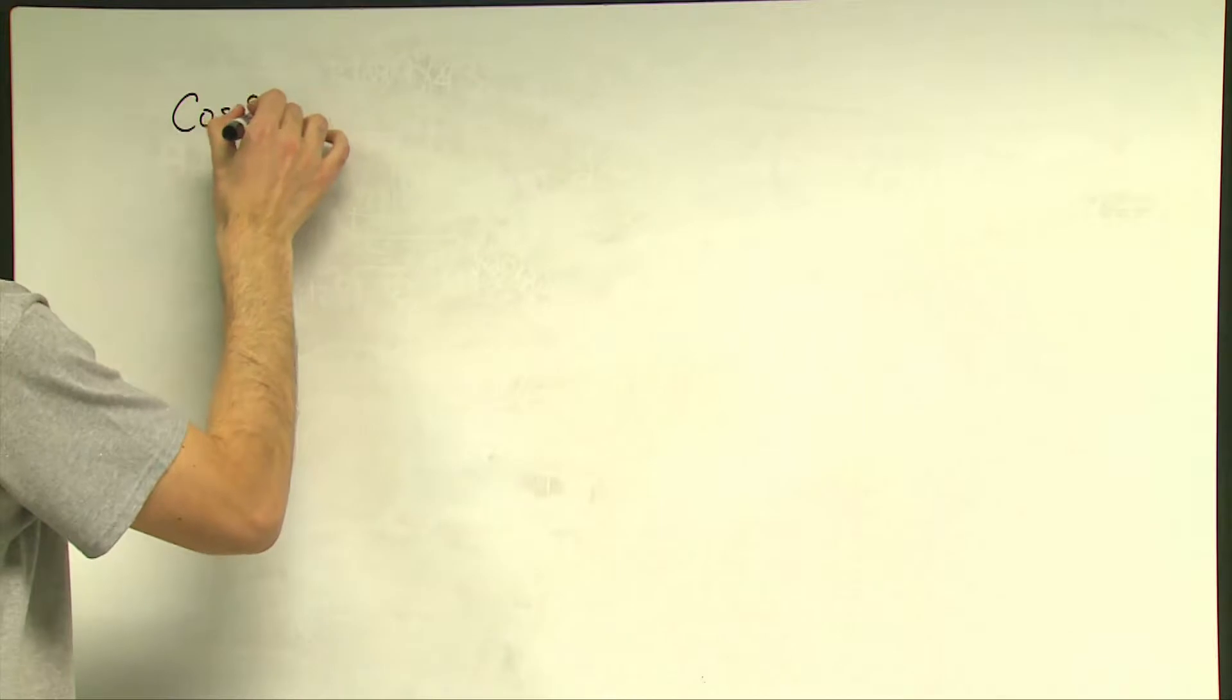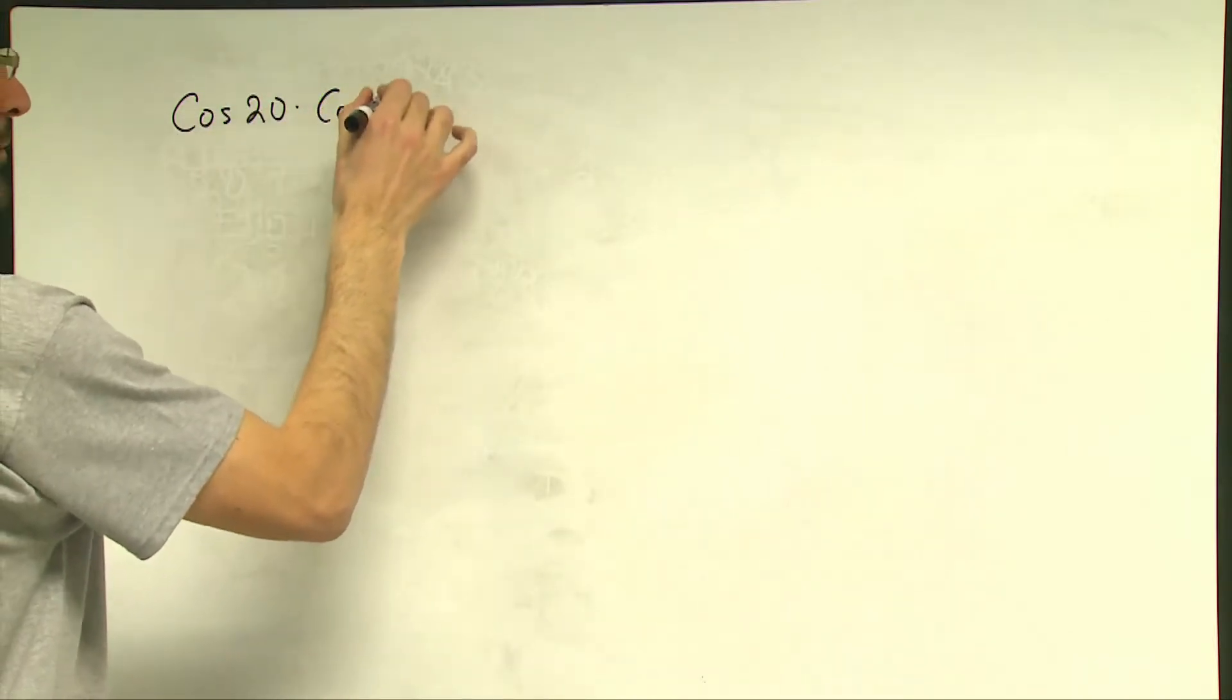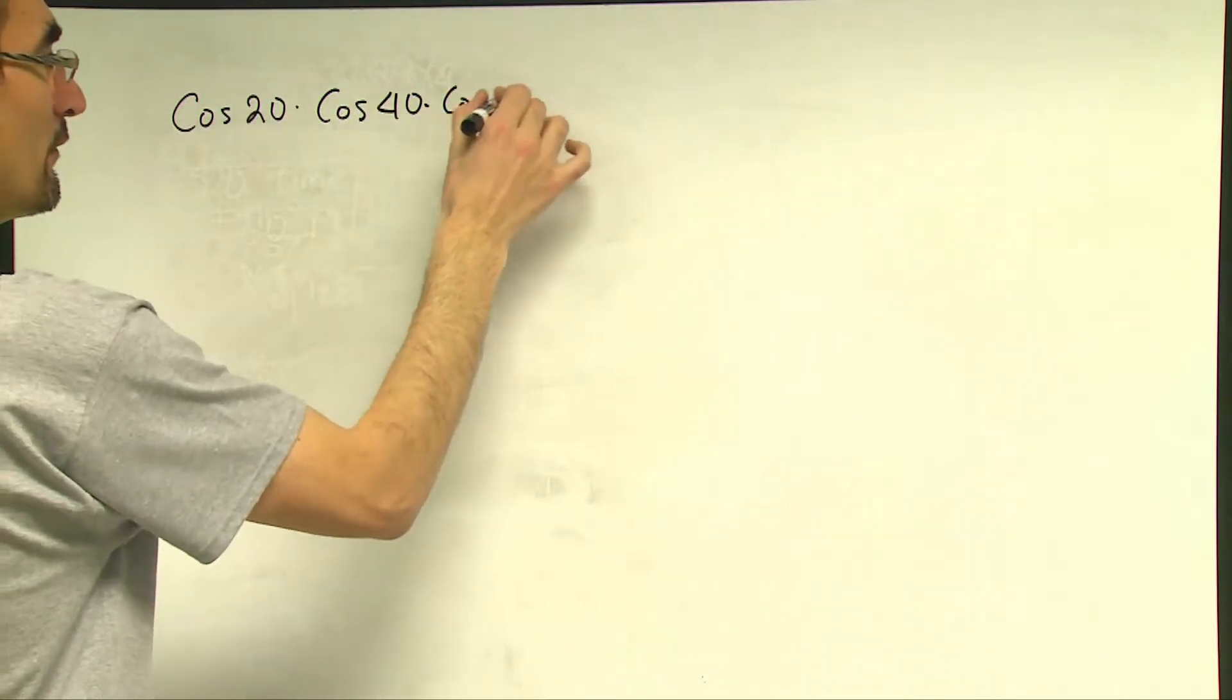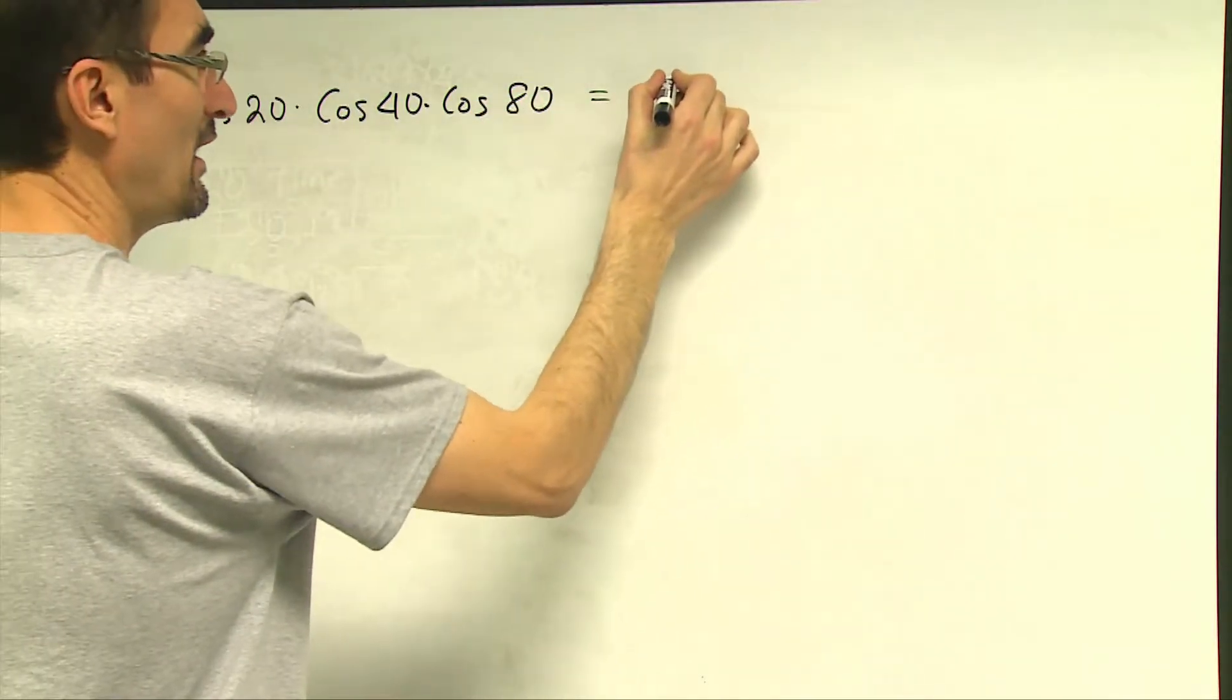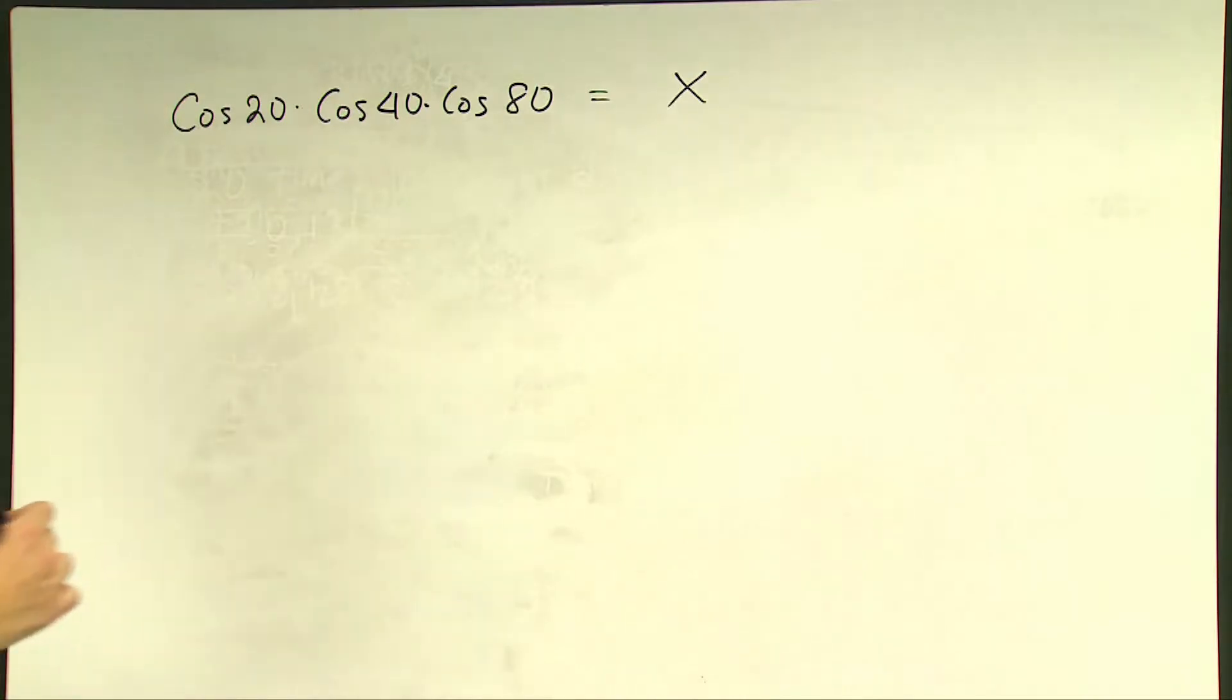For this trigonometry question we will find the value of cosine 20 times cosine 40 times cosine 80 without using the calculator. Let's call this number as x and I will actually apply and implement the half angle formula for cosine.